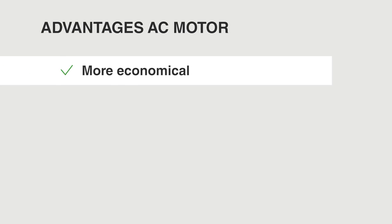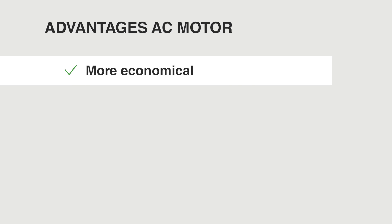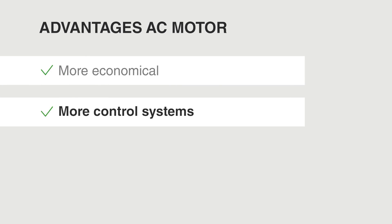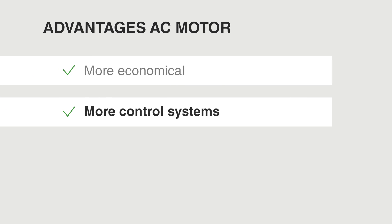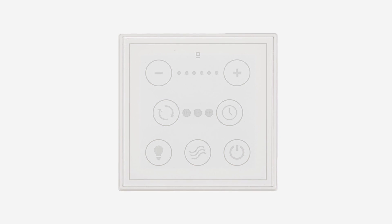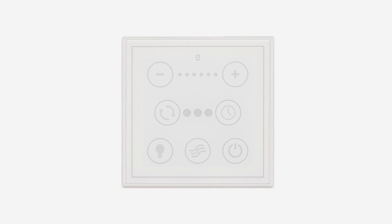Let's look at the advantages of the AC motor. First of all, it is more economical as it offers fewer features than the DC motor. However, the main advantage of the AC motor is that it is compatible with more control systems, such as the wall regulator. In fact, you can directly connect it to the mains.